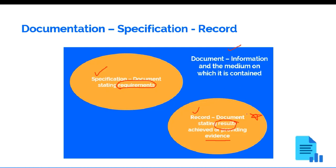For example, an audit procedure is a document — how to carry out the audit procedure is a document. The implementation of this procedure, that is the performance of the audit, generates an audit report. Whatever has been conducted or checked throughout the audit must result in an audit report, and that audit report is a record — it is a document stating the results of actions.